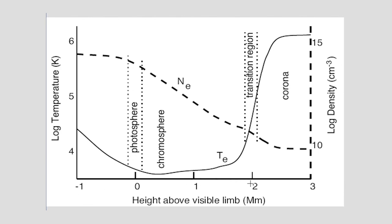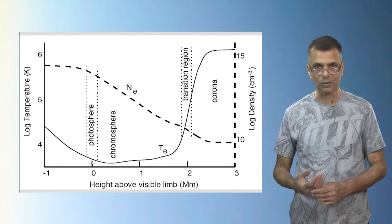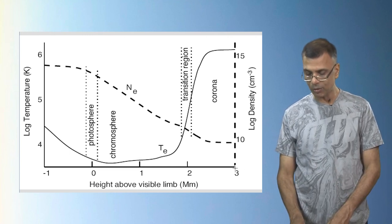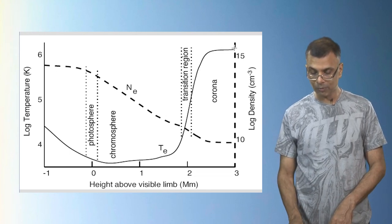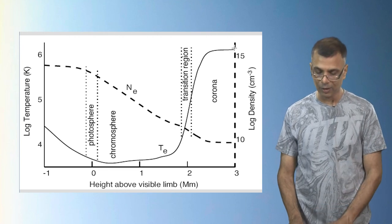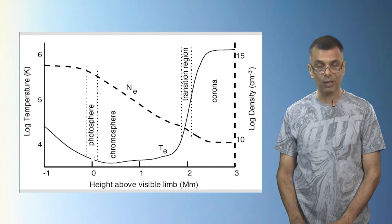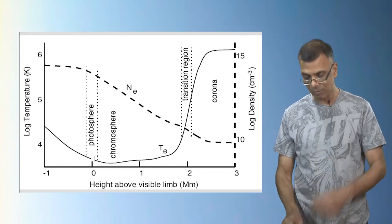On the x-axis is height above the visible limb in log of megameters; the left y-axis gives temperature in log and the right y-axis gives density in log. The temperature, shown by the solid line, first shows a slight dip and then climbs slowly, then very steeply. On the photosphere the temperature is about 5,800 kelvin, but by roughly 1,000 megameters above the surface it has climbed to over a million kelvin — three orders of magnitude — with the steepest climb occurring in what's called the transition region.